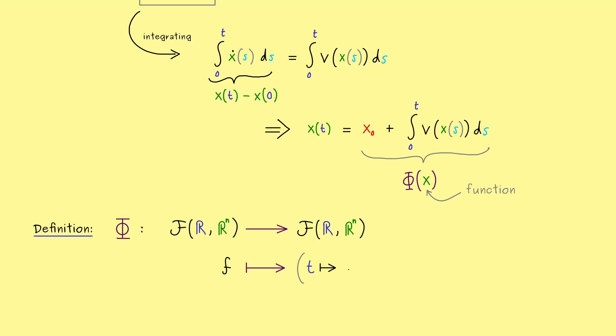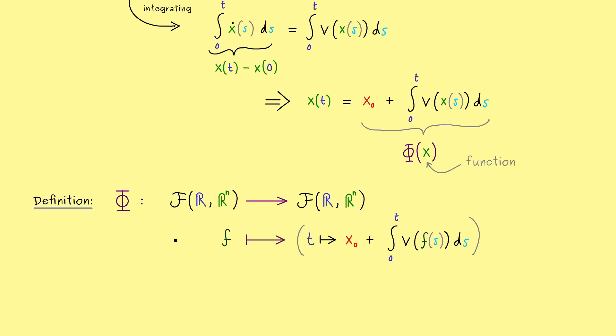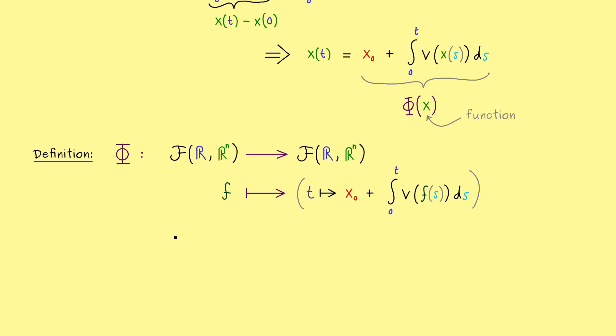This means we map f to a new function now. And the variable name for the new function here could be t. This means now t is mapped to the value of the function and we already know that. It's x0 plus the integral from 0 to t of our function v. However, now the input for the function v is f of s. Okay, there we have it. This is the definition of our map phi.